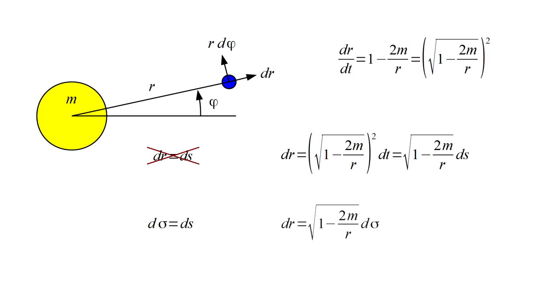Comparing this to the distant observer's expression, we conclude that his perception of spatial displacement, dr, equals the Schwarzschild factor times d sigma, the local observer's measure of displacement.